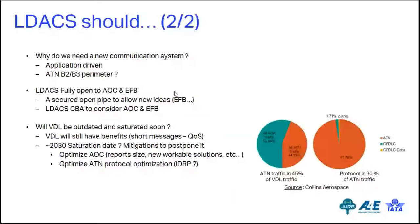On ATN protocol optimization: globally, ATN represents around 45% of total VDL traffic, and of that 45%, nearly 98% is protocol overhead — the actual payload, meaning CPDLC content, is only around 1%. If this protocol overhead could be reduced, it could be very interesting and could postpone the saturation date, allowing better preparation for an LDACS implementation.